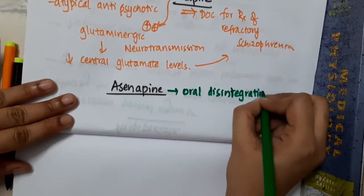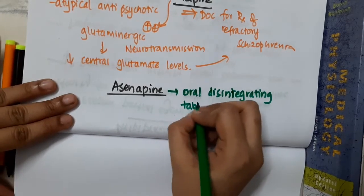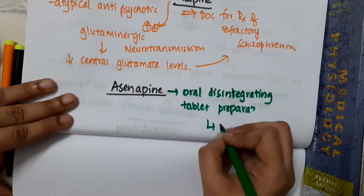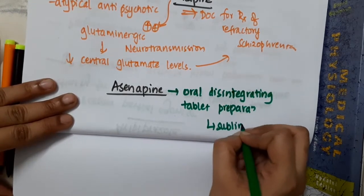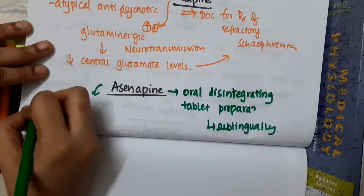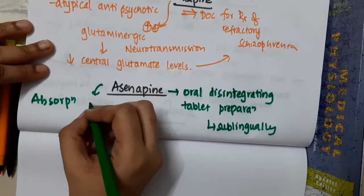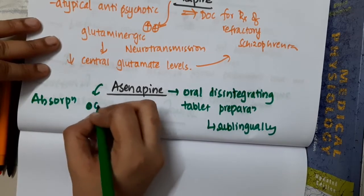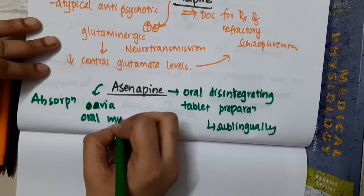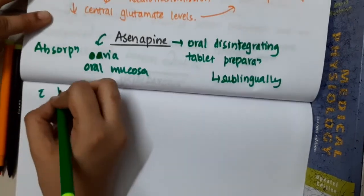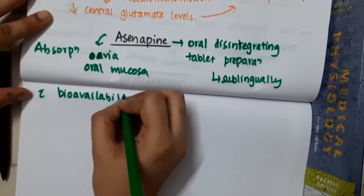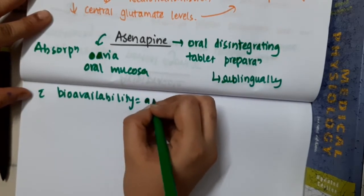Asenapine is administered sublingually. The absorption of asenapine is via the oral mucosa, with a bioavailability of around 35 percent.